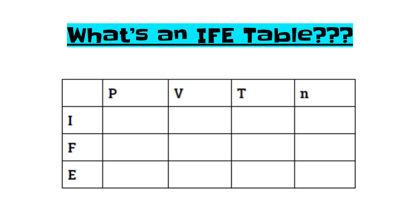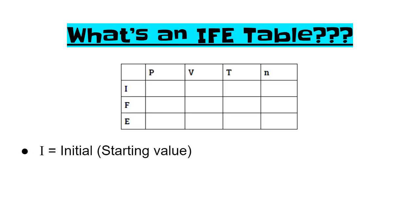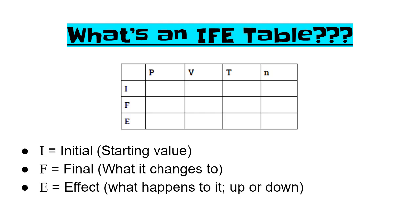This is what an IFE table looks like. It's a table across the top we have the four variables: P, V, T, and N - pressure, volume, temperature, and number of particles or moles. Down the side we have IFE. I stands for initial, the starting value for a particular variable. F stands for final, that's what it changes to. And E stands for the effect - what happens to that variable? Is it going up or is it going down?